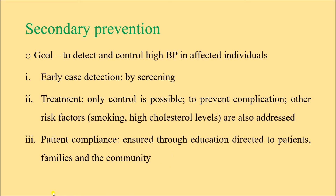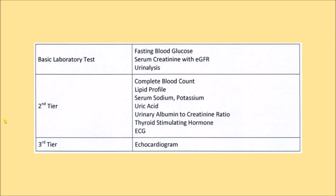We need to educate patients about hypertension, its complications, and the risks of not taking medication. Certain investigations should accompany blood pressure measurement. Basic tests include fasting blood sugar (for diabetes comorbidity), serum creatinine with estimated GFR, and urine analysis. Second-tier tests include complete blood count, lipid profile (triglyceride, LDL, HDL), serum sodium, potassium, uric acid, urinary albumin-to-creatinine ratio for kidney function, thyroid stimulating hormone for hypothyroidism, ECG, and echocardiogram for cardiac function.